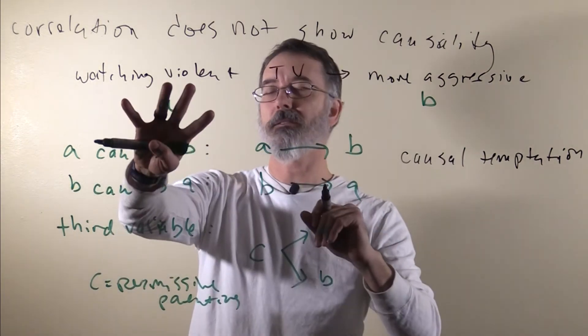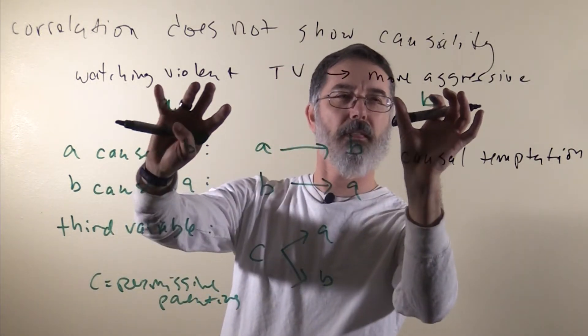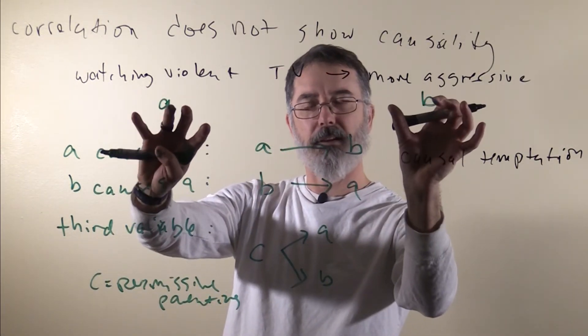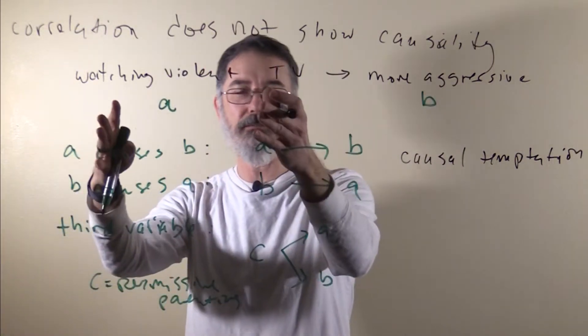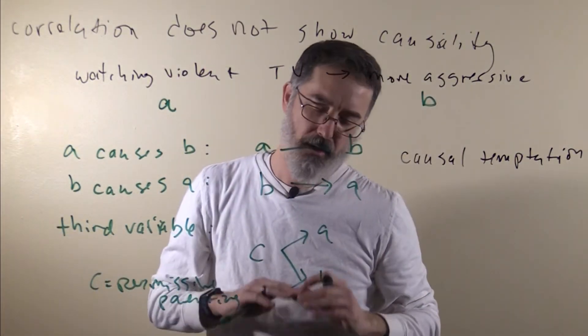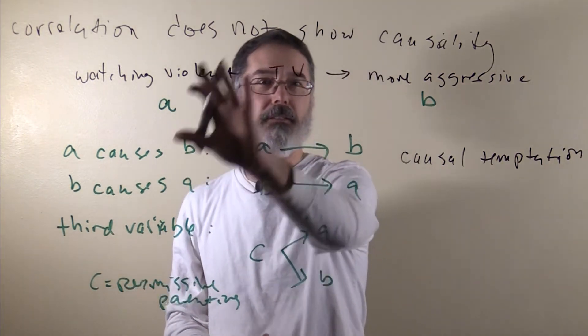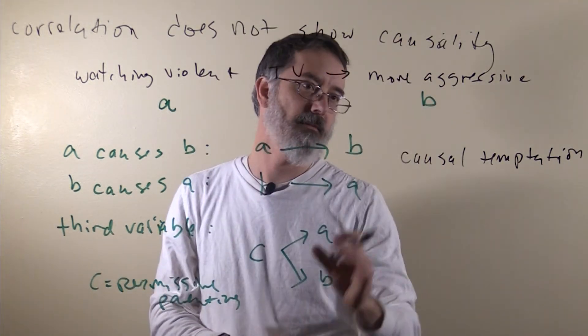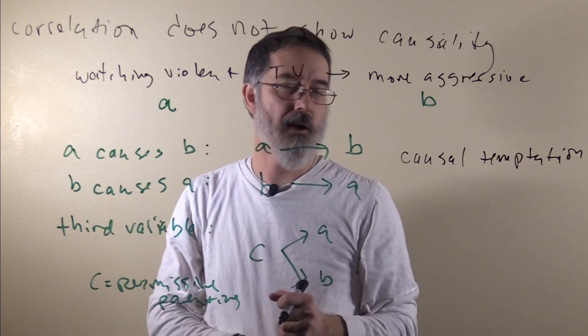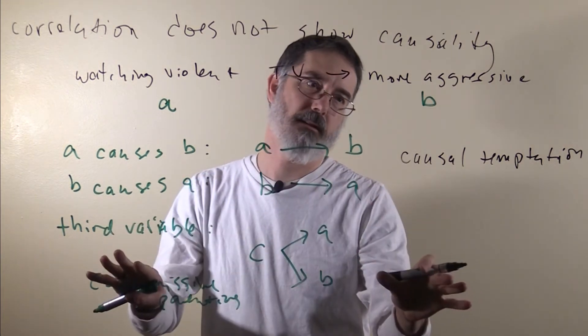This is just when we see that watching violent TV is correlated with how aggressive kids are, and now we are like, oh, it is so obvious watching violent TV makes them more aggressive. But it turns out in the real world things are much more complicated, and just a single correlation like that is not enough to be able to tell if there is a cause, if one variable is causing another.